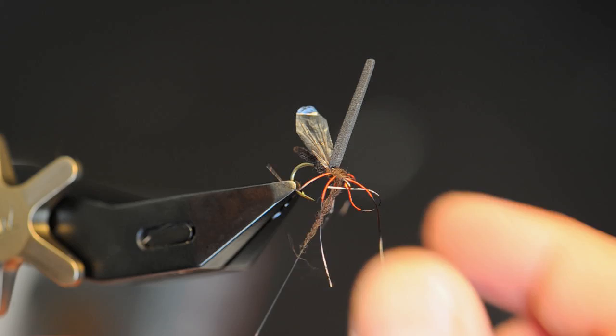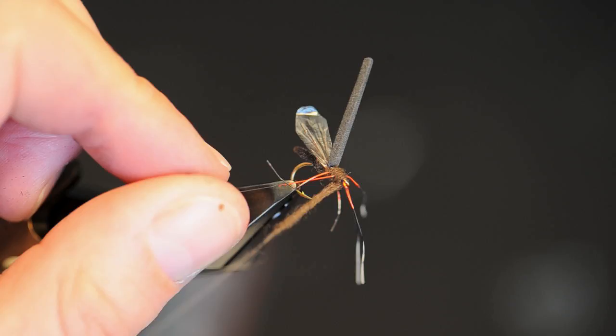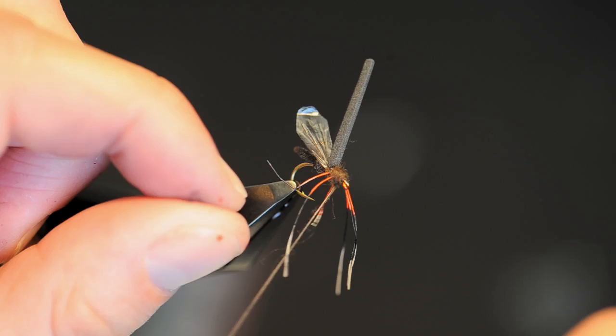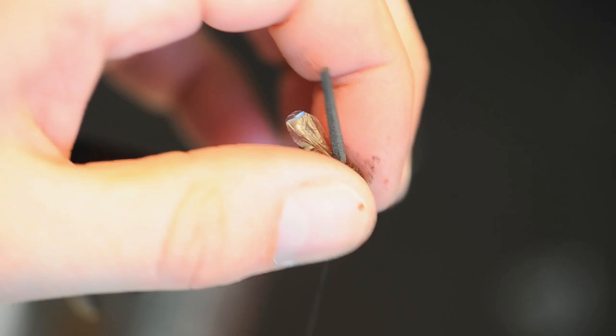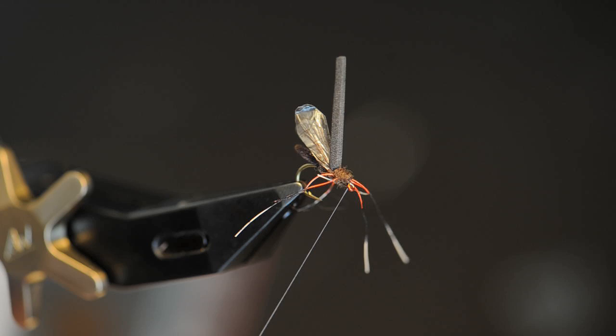The last two pairs are tied in pointing forward to make all six look all sprayed out as a crash landed BBO. Grab them two pointing forward and make a couple of wraps just behind the hook eye.